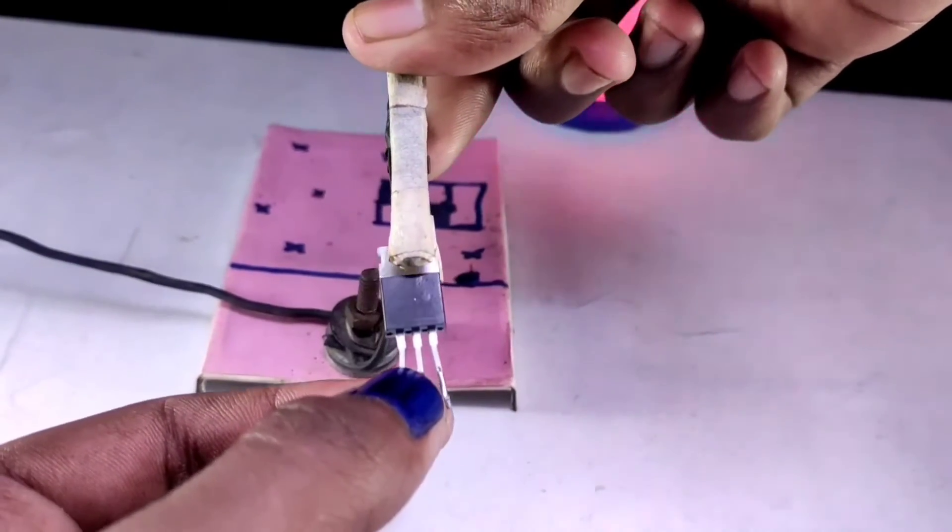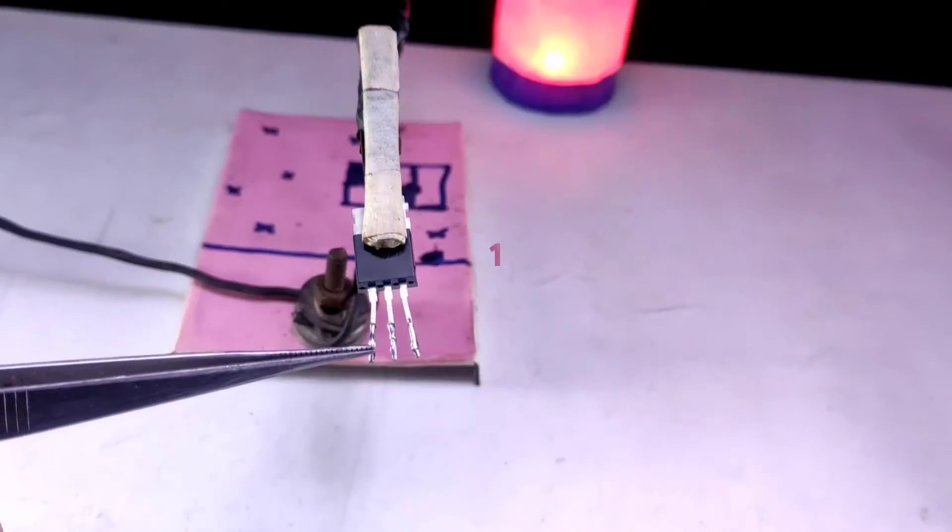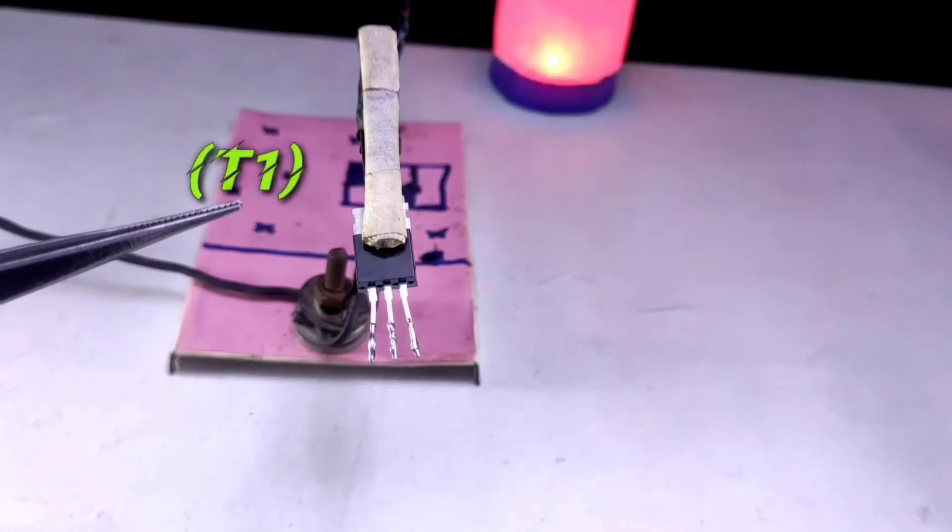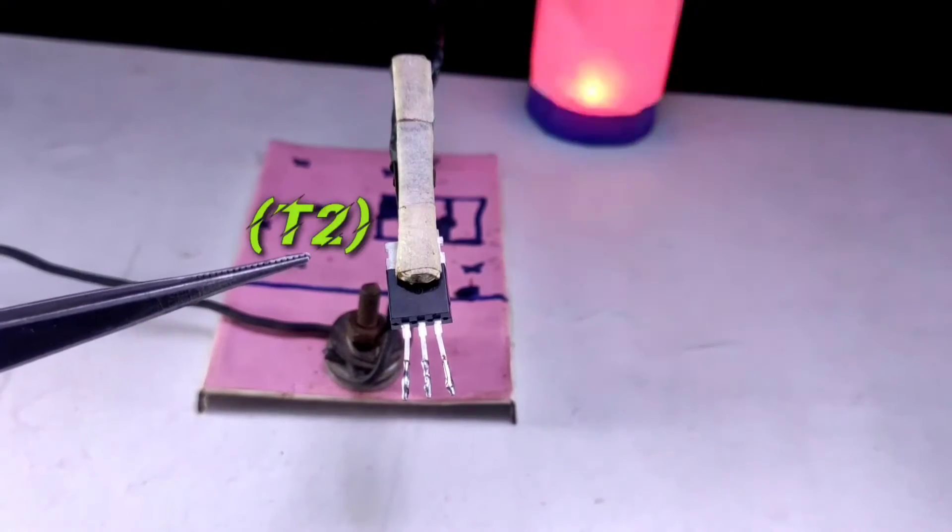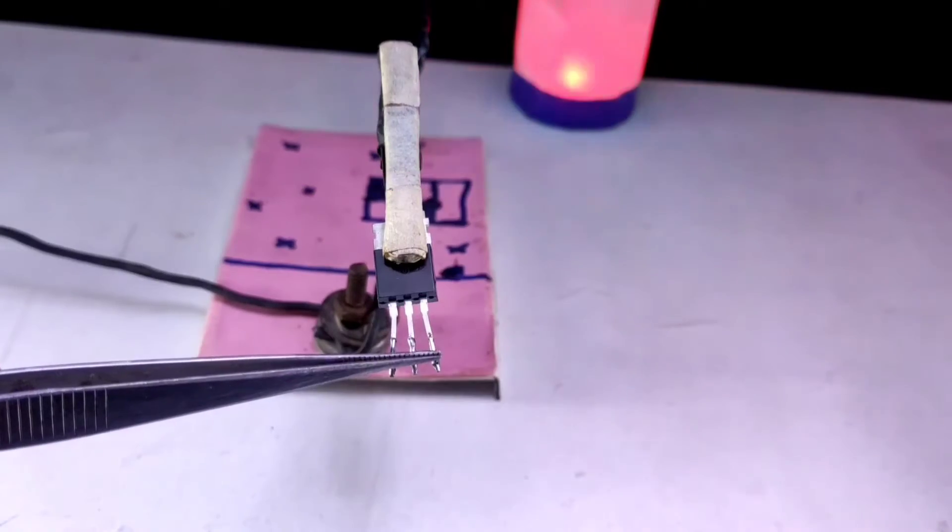Then I am taking a BT-136 triac and I am clipping it. The first pin of the BT-136 triac is Terminal 1, the second pin is Terminal 2, and the third pin is Gate.